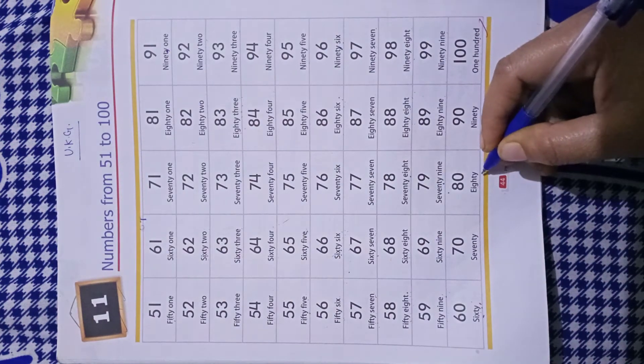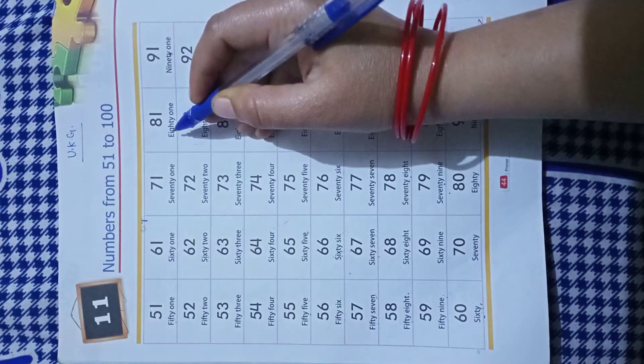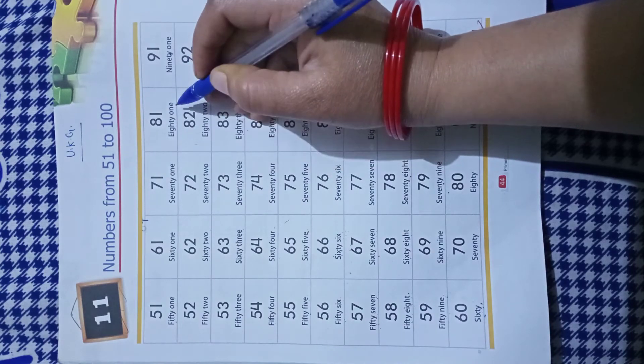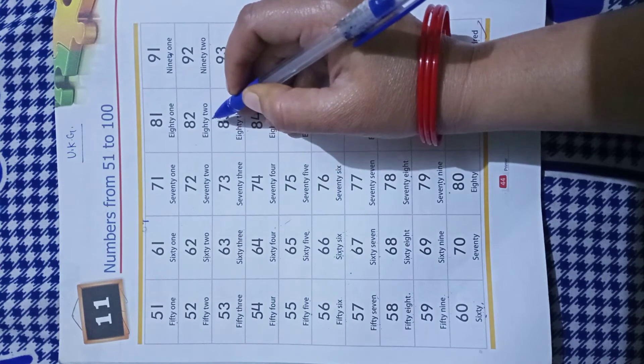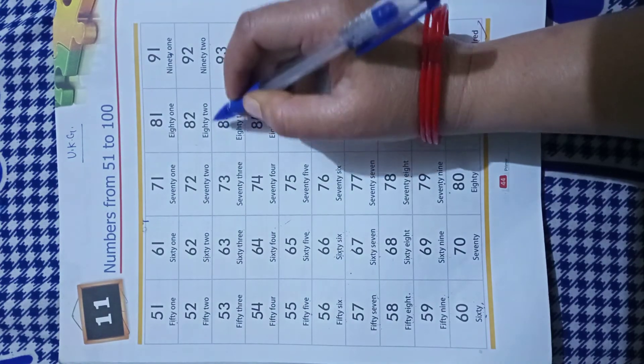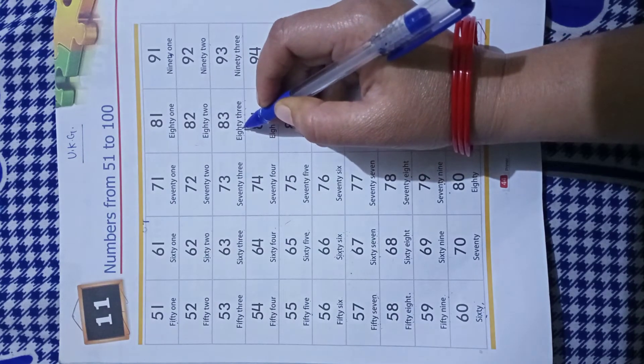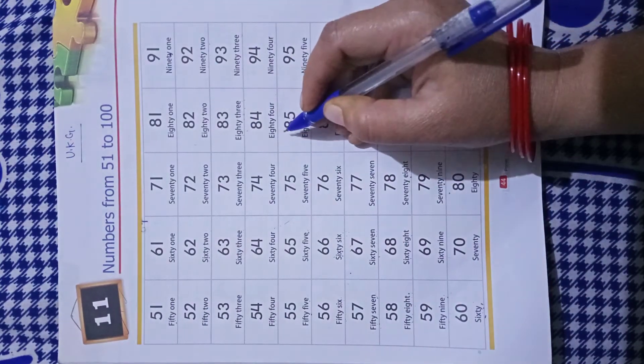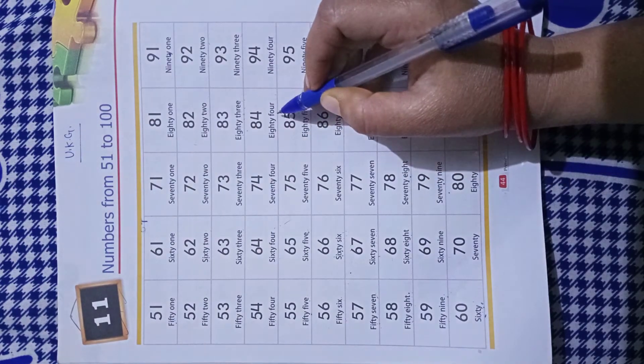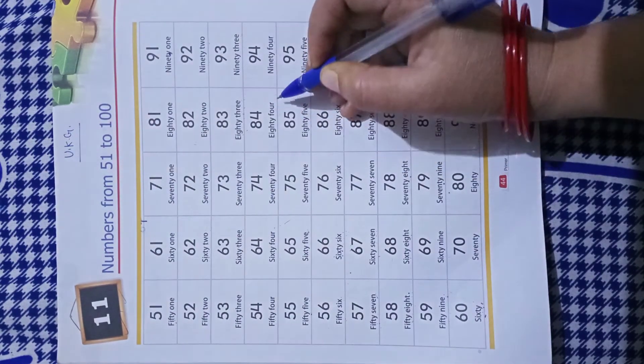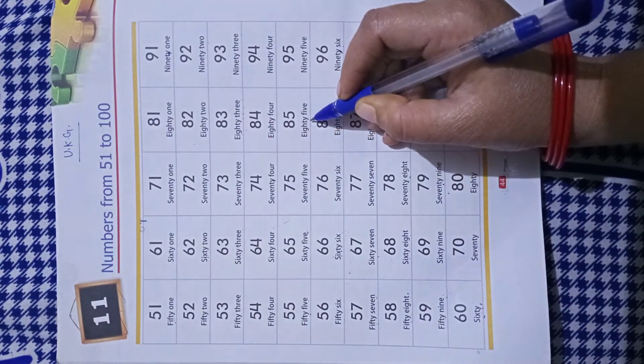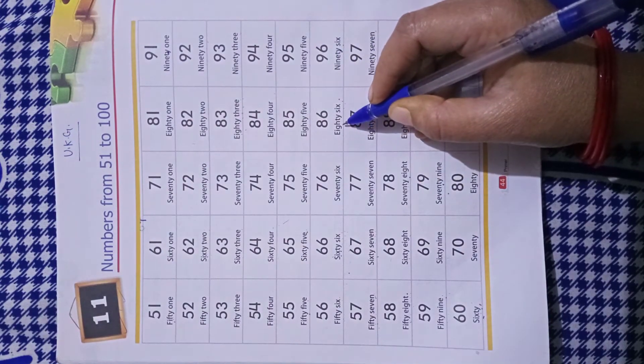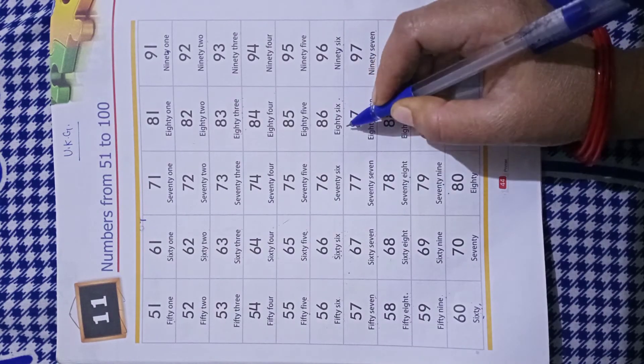EIGHTY-80, EIGHTY-80 ONE-1-81, EIGHTY-80 TWO-2-82, EIGHTY-80 THREE-3-83, EIGHTY-80 FOUR-4-84, EIGHTY-80 FIVE-5-85, EIGHTY-80 SIX-6-86.